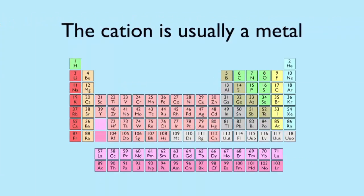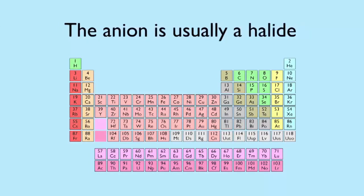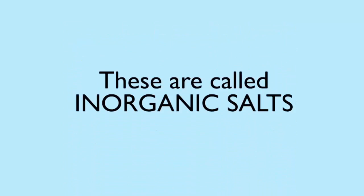The cation tends to be a metal and in many common examples is one from group one or two of the periodic table. The anion is commonly a halide from group seven or a member of group six. Salts made like this are called inorganic salts, but this is not always the case.